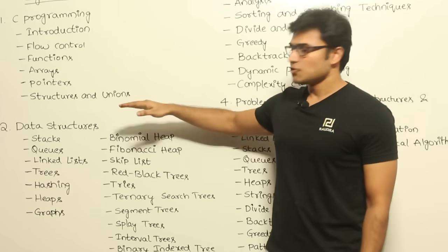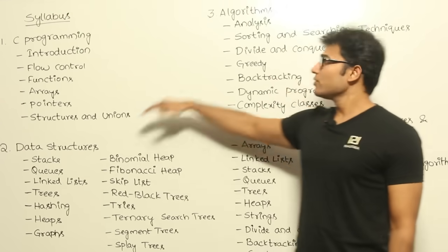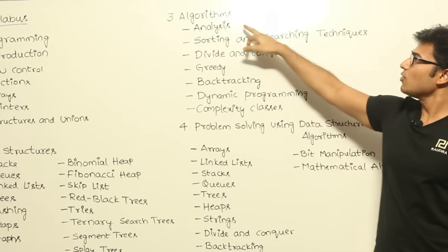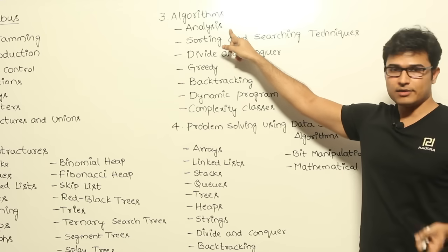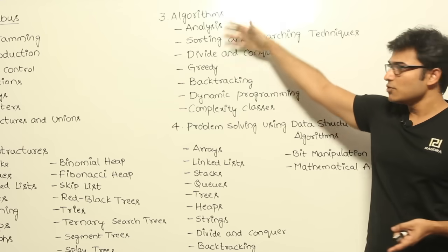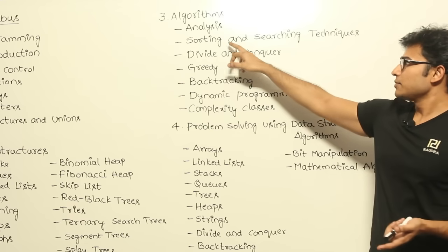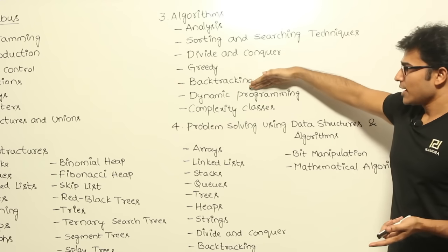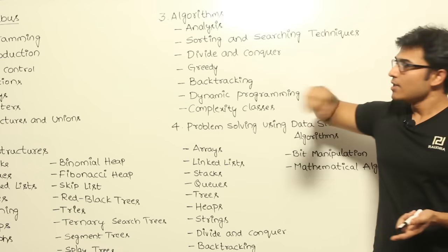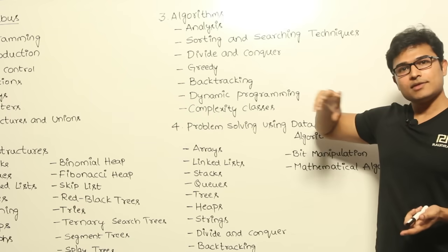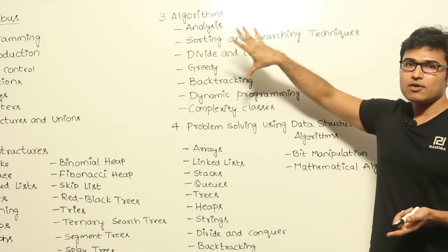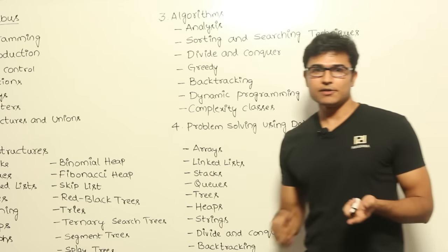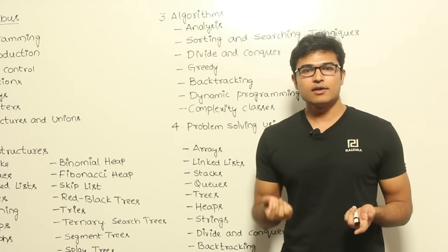After data structures, we go with algorithms. We start from the basics, explaining how to analyze space and time complexity, and then cover various paradigms: sorting and searching techniques, divide and conquer, greedy, backtracking, dynamic programming, and complexity classes. While explaining these techniques, we work through standard examples.